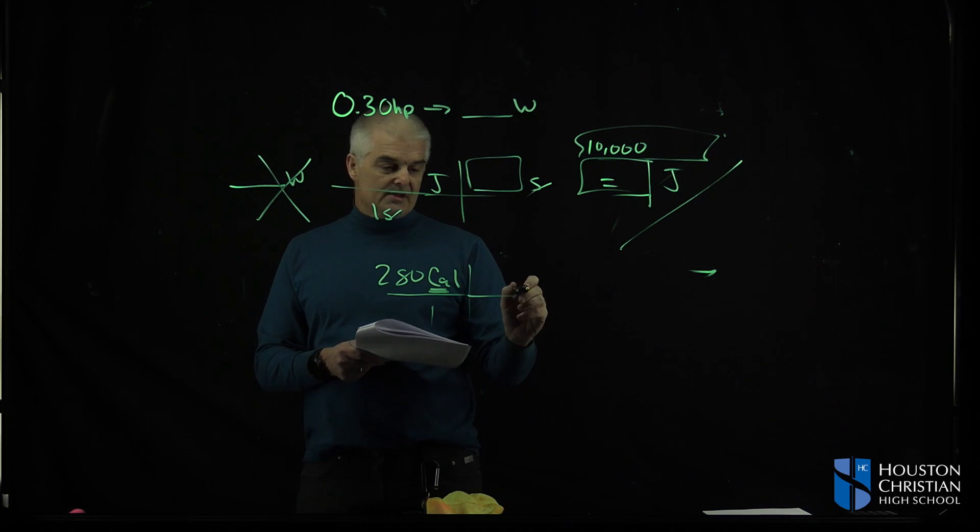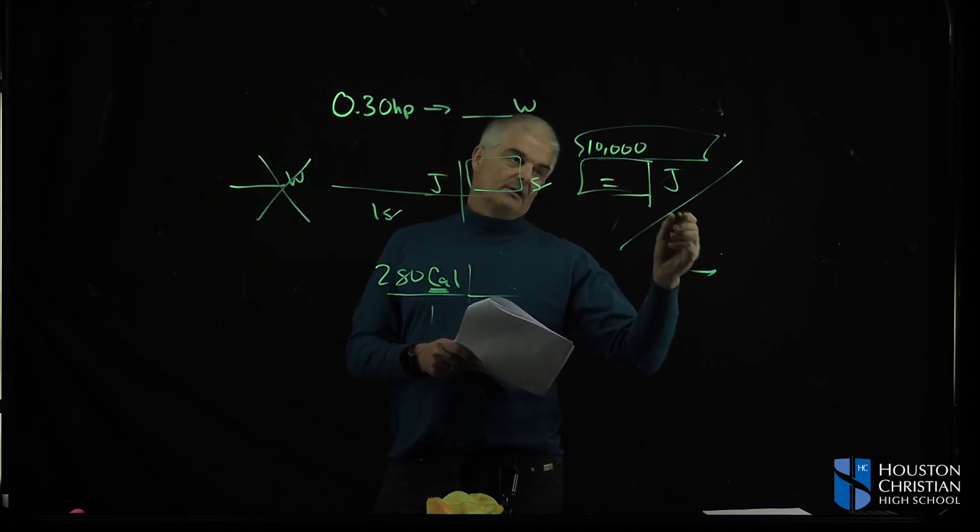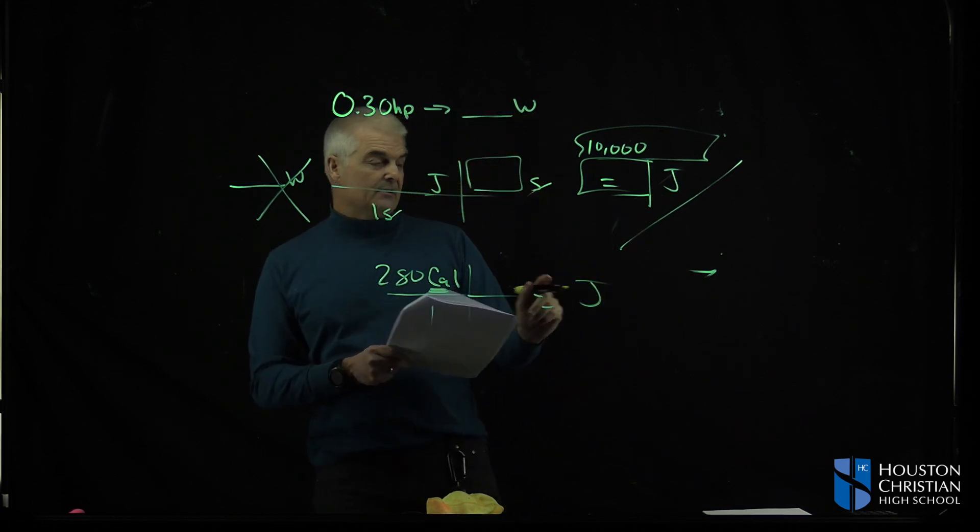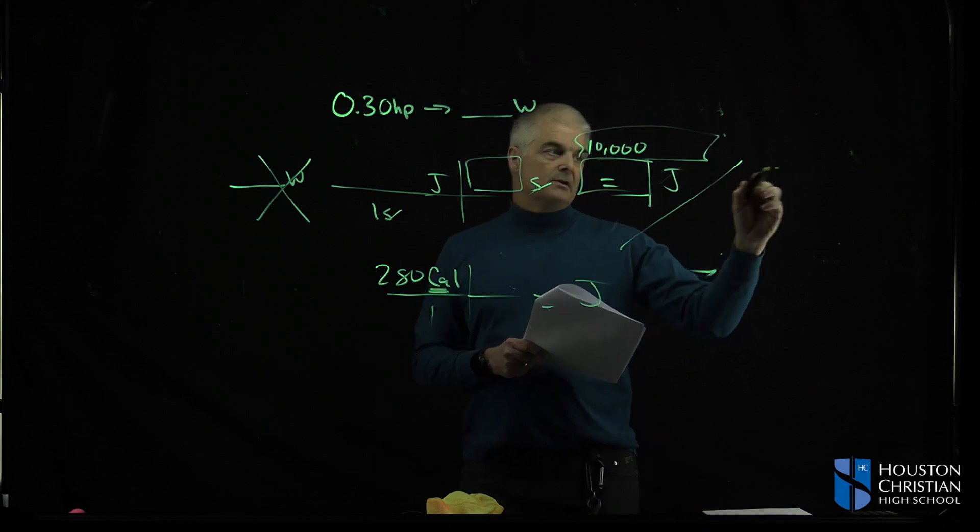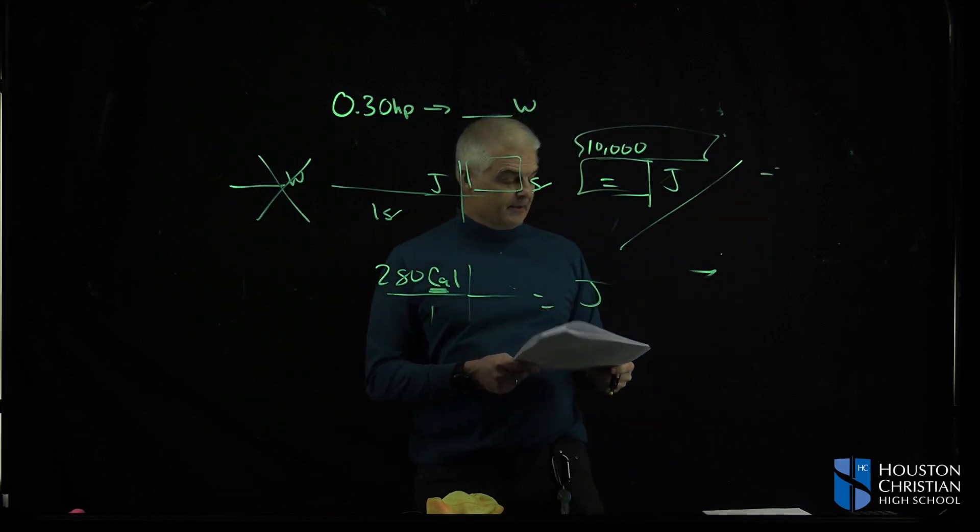Then once you know this number, that's how many calories are in a bar, you take the joules by the calories in a bar. The joules, if you convert this to joules, okay, to real joules, not kilojoules, then you will get how many candy bars he needs to eat. It's not a big number, by the way, the final answer.